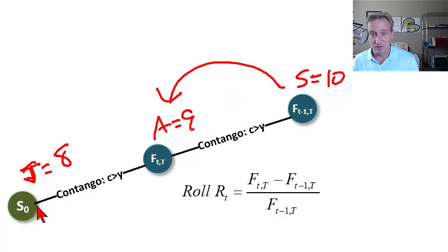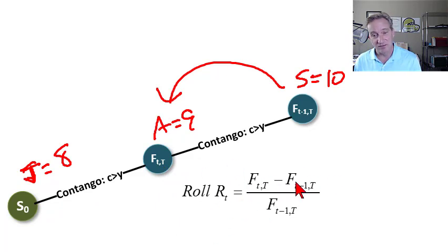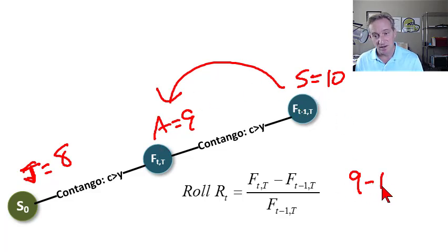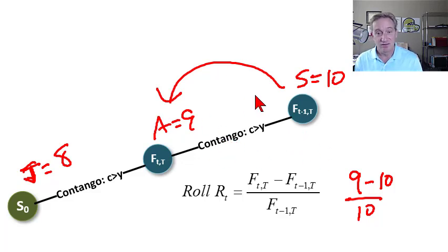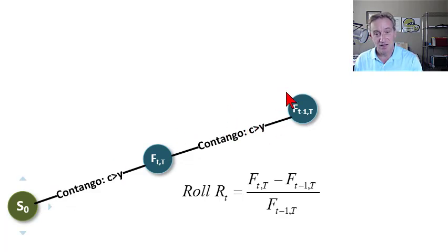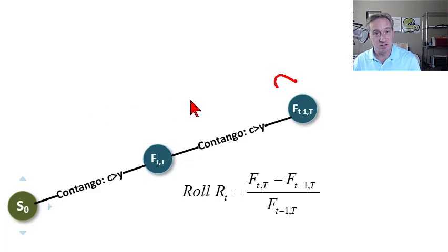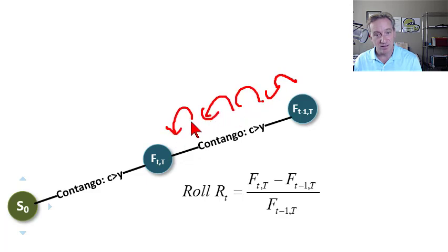If the curve has been static and unchanged, the price on our September contract — now one month to maturity — is down to $9, because the forward price converges on the spot price as maturity approaches. But we purchased or took a long position at $10, and now we're at $9. Most contracts are closed out rather than held to delivery. So the roll return has us selling at $9 to close out our buying position: $9 minus $10 divided by $10 gives us a negative 10% roll return on a long position. In contango, I think of that as sliding down the curve — buying high and selling low.